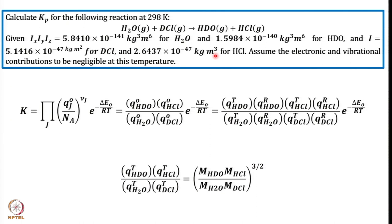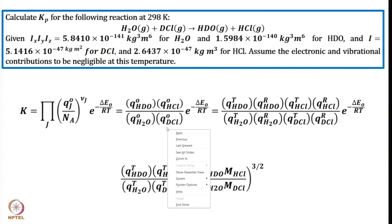Assume electronic and vibrational contributions are negligible at this temperature — so only translational and rotational contributions need to be considered. The equilibrium constant K is defined as the product of Qj⁰/NA raised to stoichiometric power nu_j, where nu_j is positive for products and negative for reactants, times exponential minus delta E₀ by RT. For this reaction: K equals Q⁰(HDO)·Q⁰(HCl) divided by Q⁰(H₂O)·Q⁰(DCl), times exponential minus delta E₀ by RT, with each NA term cancelling.